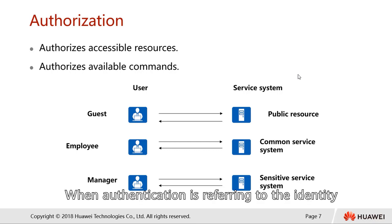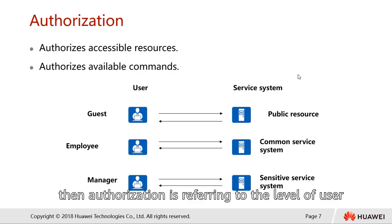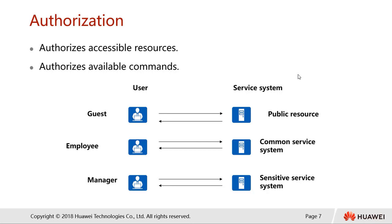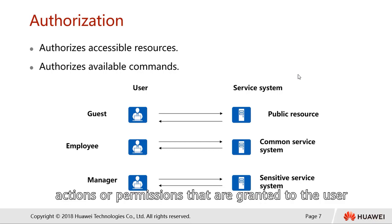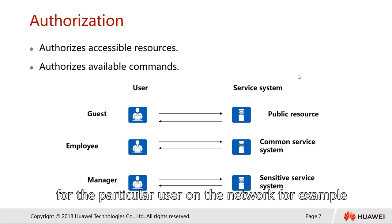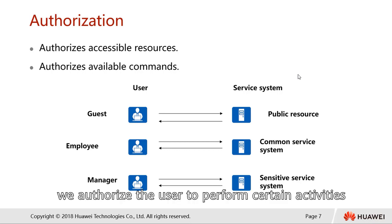When authentication refers to the identity, then authorization refers to the level of user access. Authorization means the actions or permissions granted to the user — it usually has to do with access control for the particular user on the network. For example, we can authorize a user to access certain resources in our environment or to perform certain activities.